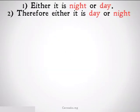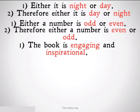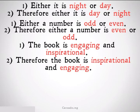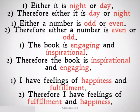Either it is night or day — we can switch those terms. Therefore, it's either day or night. Either a number is odd or even, therefore a number is even or odd. This book is engaging and inspirational, therefore the book is inspirational and engaging. I have feelings of happiness and fulfillment, therefore I have feelings of fulfillment and happiness. This works for either disjunction — the "or" — or conjunction — the "and."